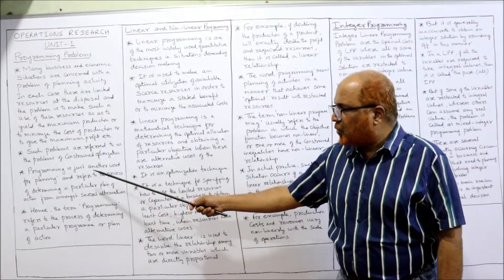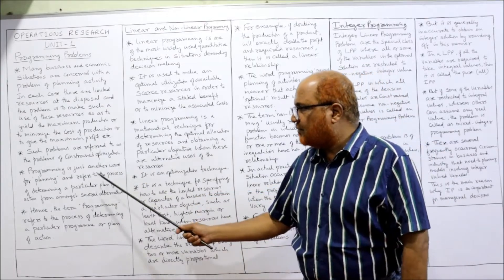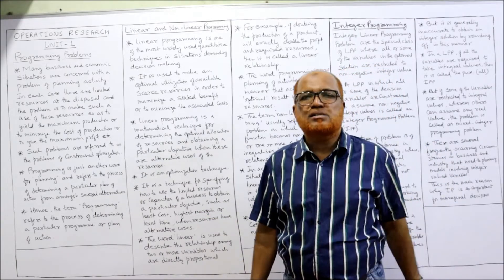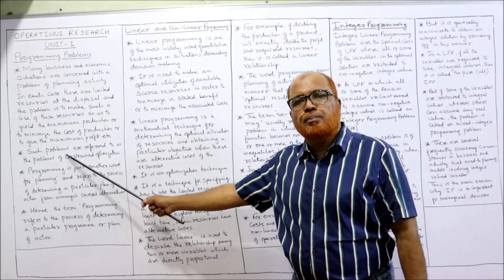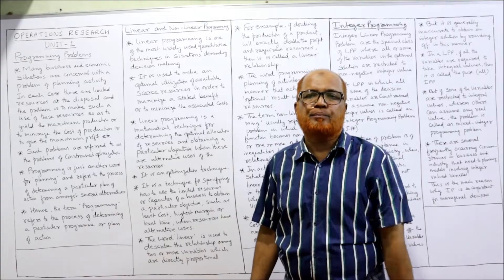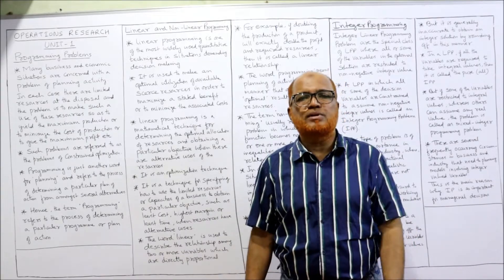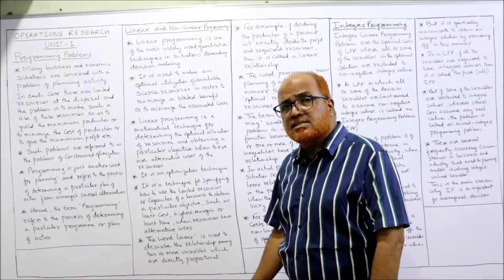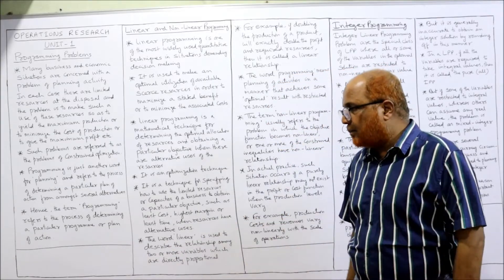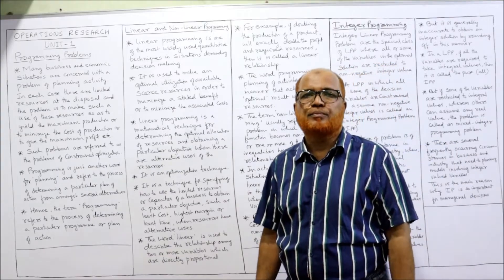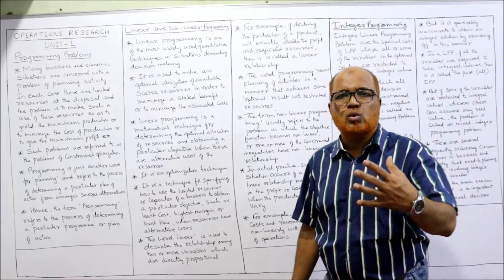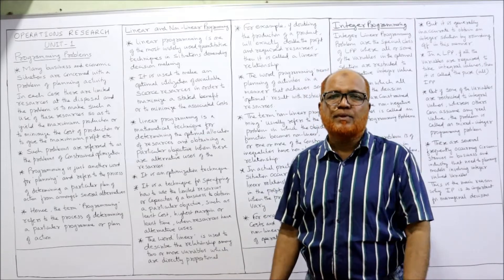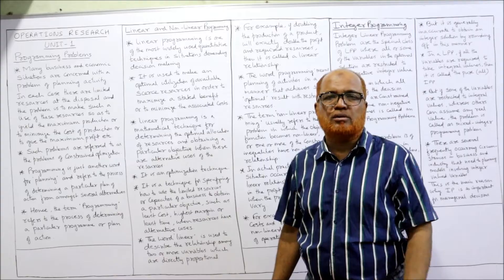Programming is just another name for planning and refers to the process of determining a particular plan of action among several alternatives. Decision making is concerned with choosing among alternatives. So programming problems means planning or deciding which course of action to select out of a number of alternative situations. Every management faces many alternatives and must select one — that requires planning.